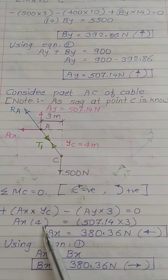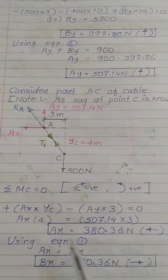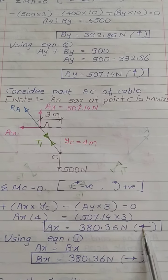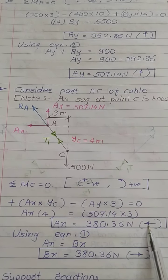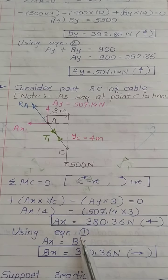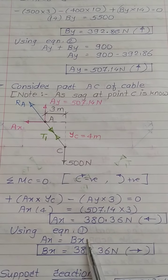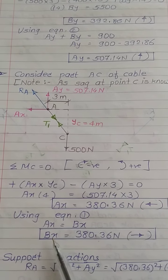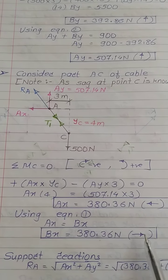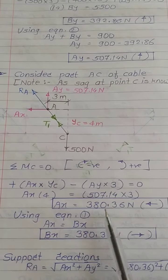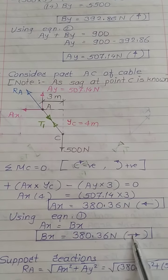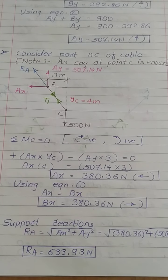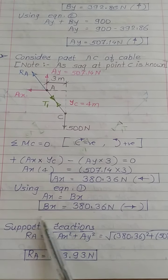From equation one, Ax = Bx, so Bx has the same magnitude as Ax but acts towards the right side.